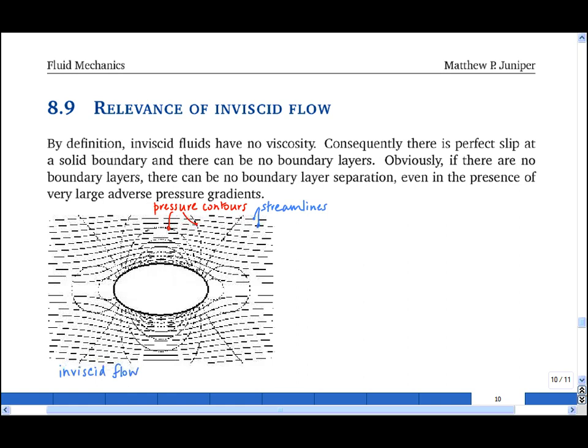Now, by definition, inviscid flows have no viscosity. Consequently, there is perfect slip at the boundaries, and therefore there are no boundary layers.